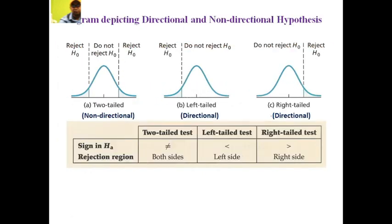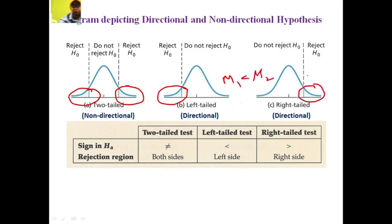With the help of a diagram, we can also understand the concept of directional and non-directional hypothesis. A non-directional hypothesis is used in a two-tailed test — you can see the tails in both directions, right as well as left. In a left-tailed t-test, the tail is only in the left direction and M1 is less than M2. In a right-tailed test, the tail is in the right direction and M1 is greater than M2. In a two-tailed test (non-directional hypothesis), M1 is not equal to M2.